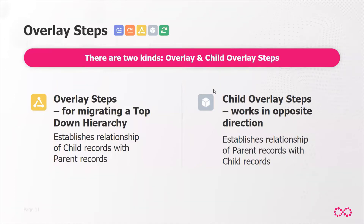The child overlay step, designated by a gray icon, works in the opposite direction. If you wanted to migrate all opportunities with more than one million dollars and then the accounts and contacts related to those opportunities, in this example the main criteria is on the lower-level object — the opportunity. The parent of the opportunity would be the associated account or contact. The child overlay step establishes the relationship between parent and child records, determining what parent records should be picked up based on what was found at the child level.